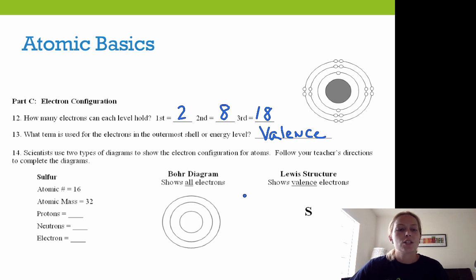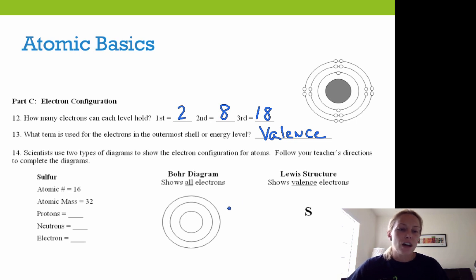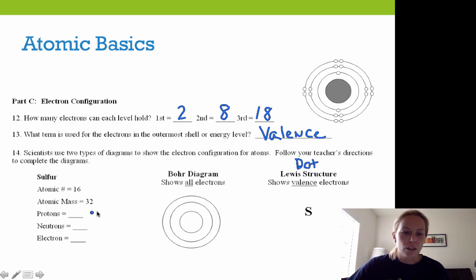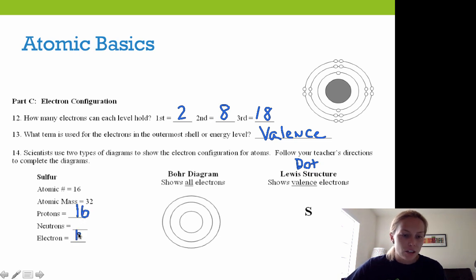For number 14, scientists use two types of diagrams to show the electron configuration for atoms: a Bohr diagram, which shows all electrons, and a Lewis dot structure, which shows only the valence electrons. We're going to take a look at sulfur. Sulfur has an atomic number of 16, which means 16 protons and 16 electrons. Taking 32 minus 16, we also have 16 neutrons.